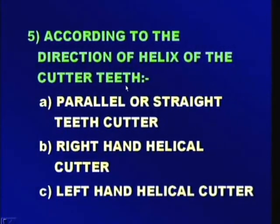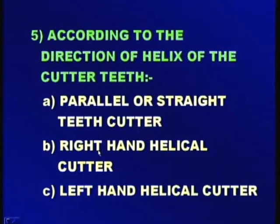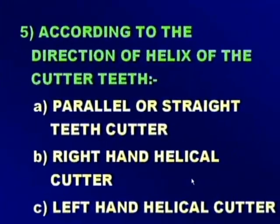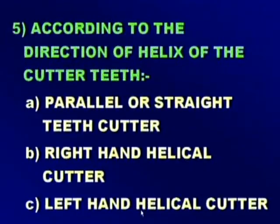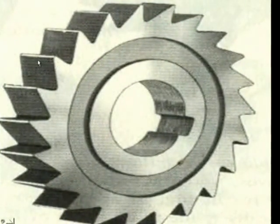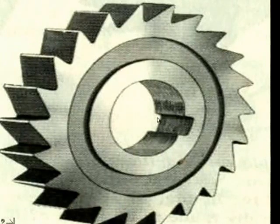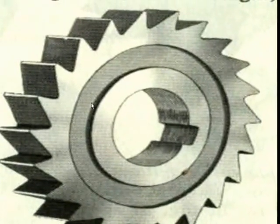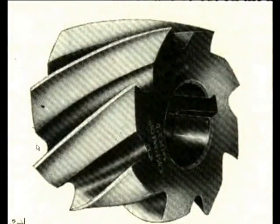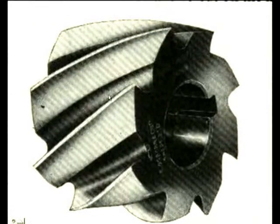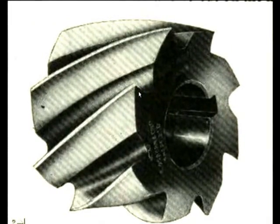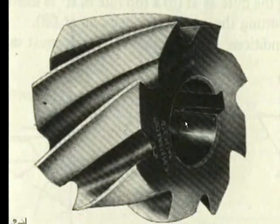The fifth classification is according to the direction of helix of the cutter teeth. We have three types: parallel or straight teeth cutter, right hand helical cutter, and left hand helical cutter. In parallel cutters, all the teeth are parallel to the axis of the cutter. In helical cutters, the teeth are not parallel to the axis — they make some angle. These are all types of cutters having helixes either straight or at an angle to the axis of the cutter.